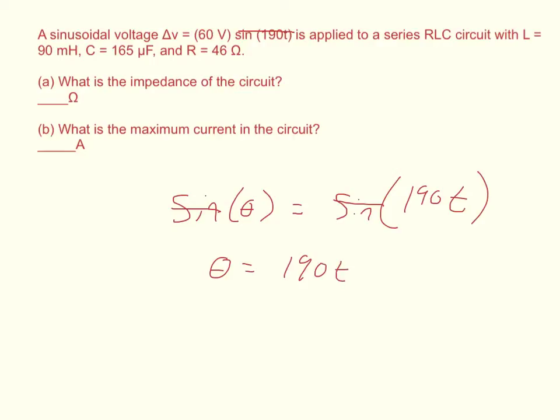What is 190? Well, if we divide by T, we get θ/T = 190. So what is θ/T? Well, that's the same thing as angular speed. So this is just telling us that our angular speed is 190.